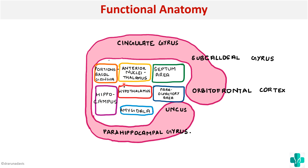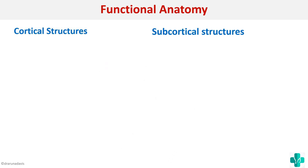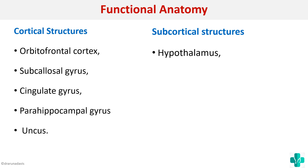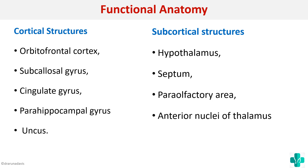This diagram is from Guyton and Hall Textbook of Physiology. The cortical structures are: orbitofrontal cortex, subcallosal gyrus, cingulate gyrus, parahippocampal gyrus, and uncus. The subcortical structures are: hypothalamus, septum, para-olfactory area, anterior nuclei of thalamus, and amygdala.